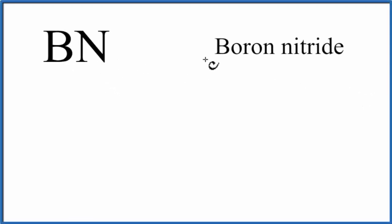To write the Lewis structure for BN, that's boron nitride, let's count the valence electrons up.